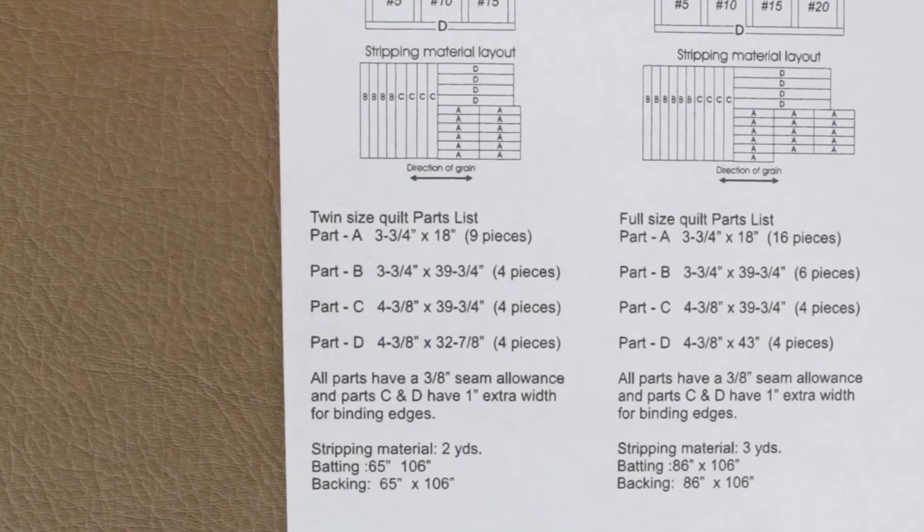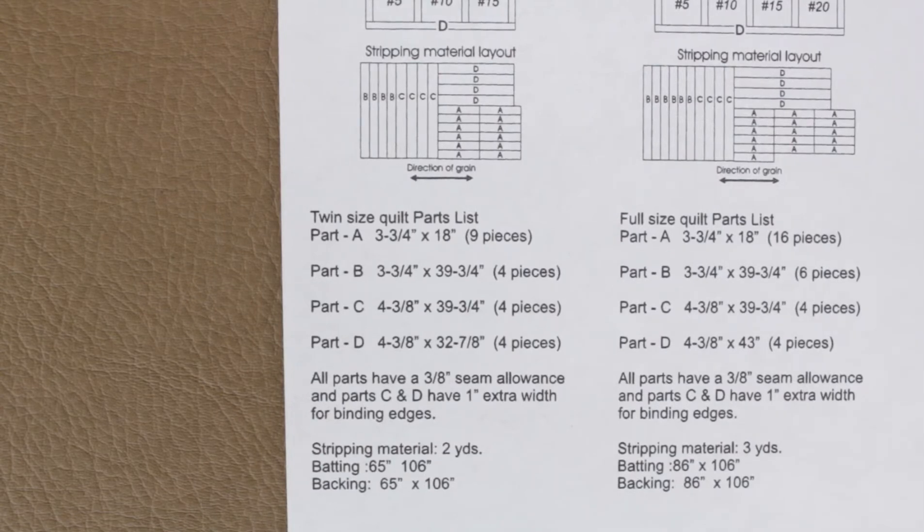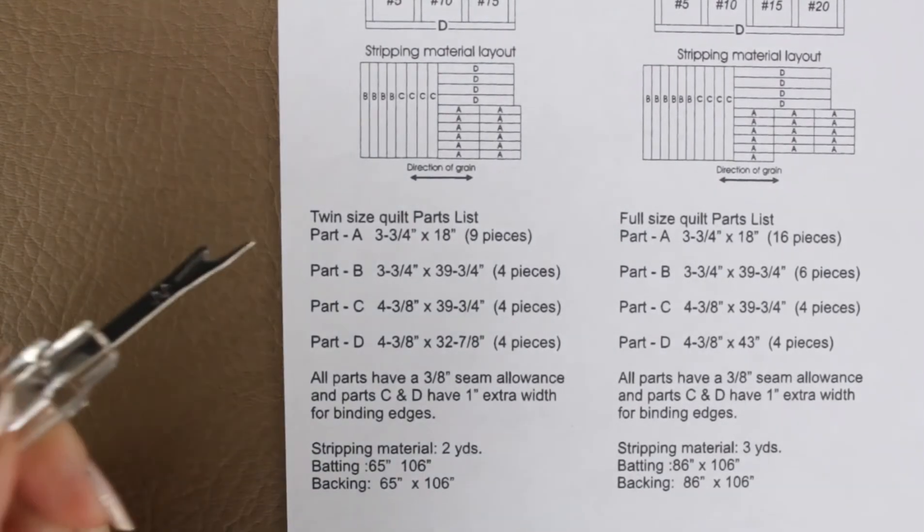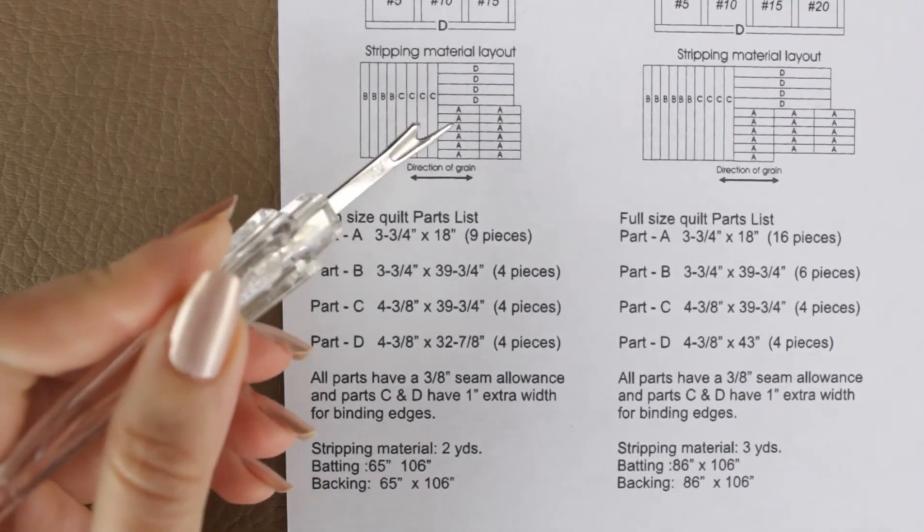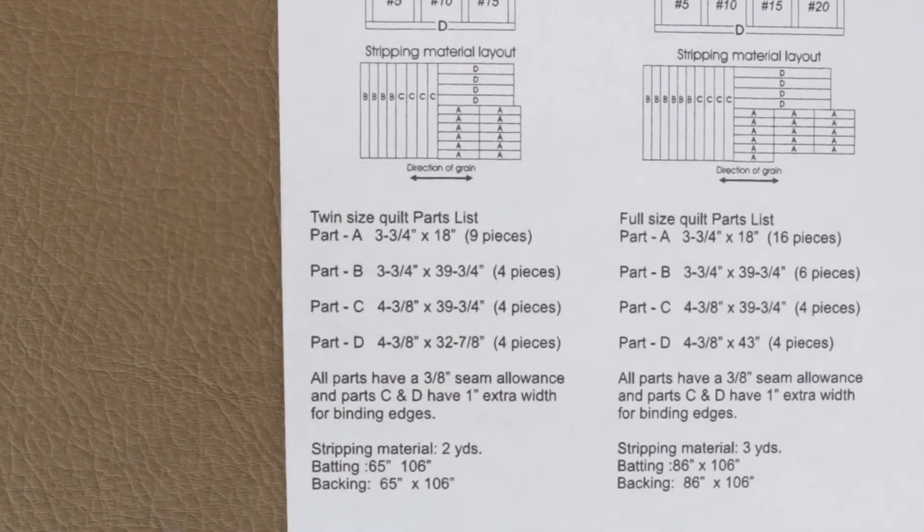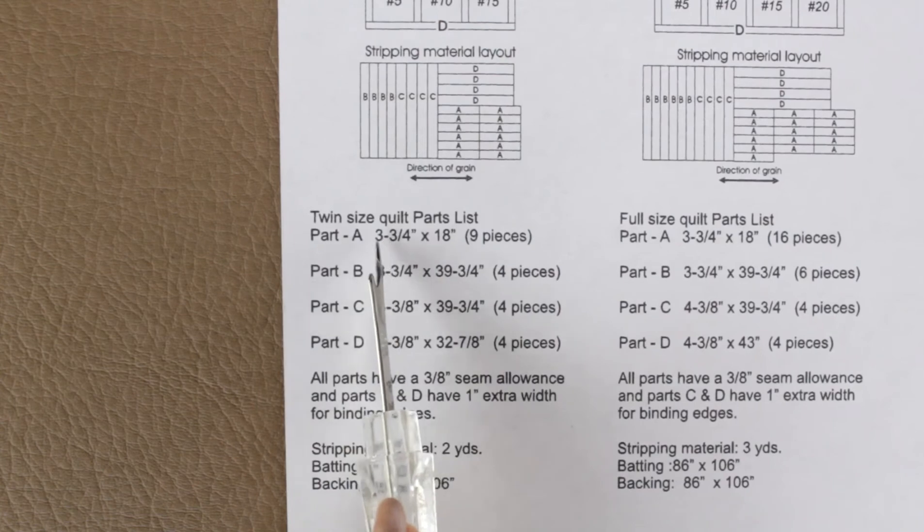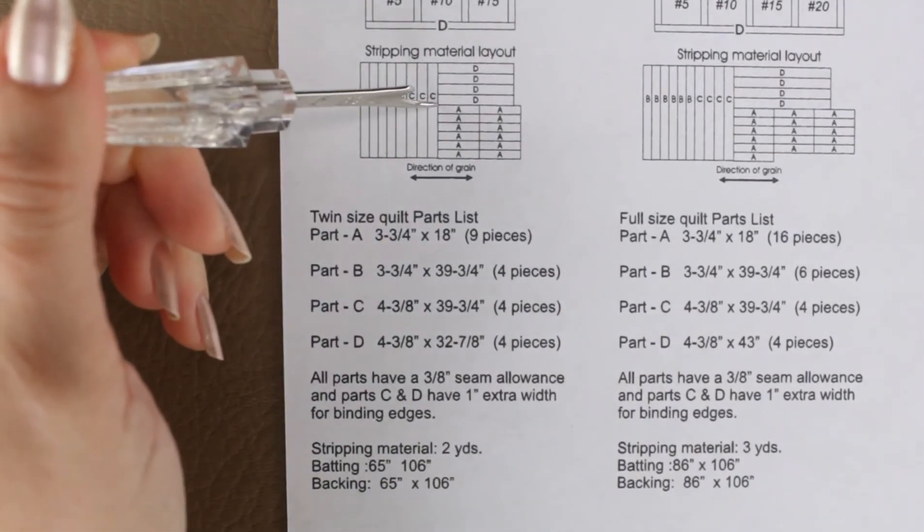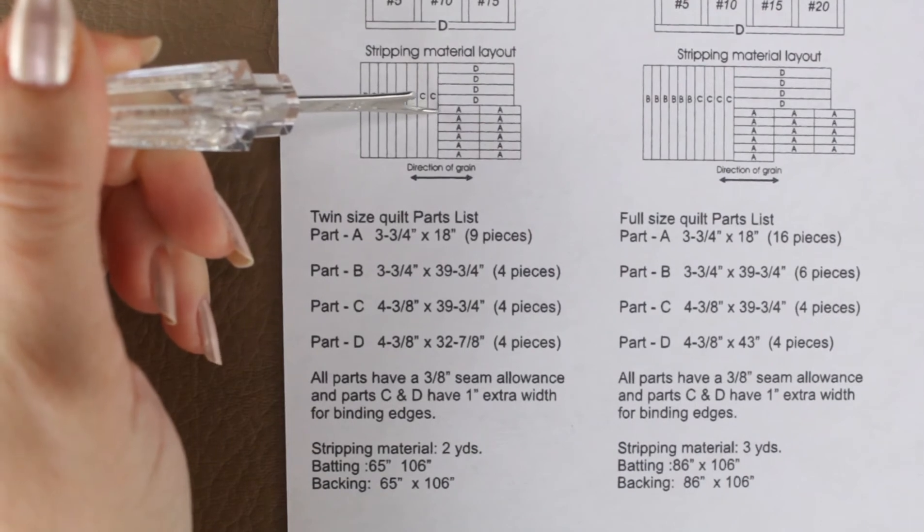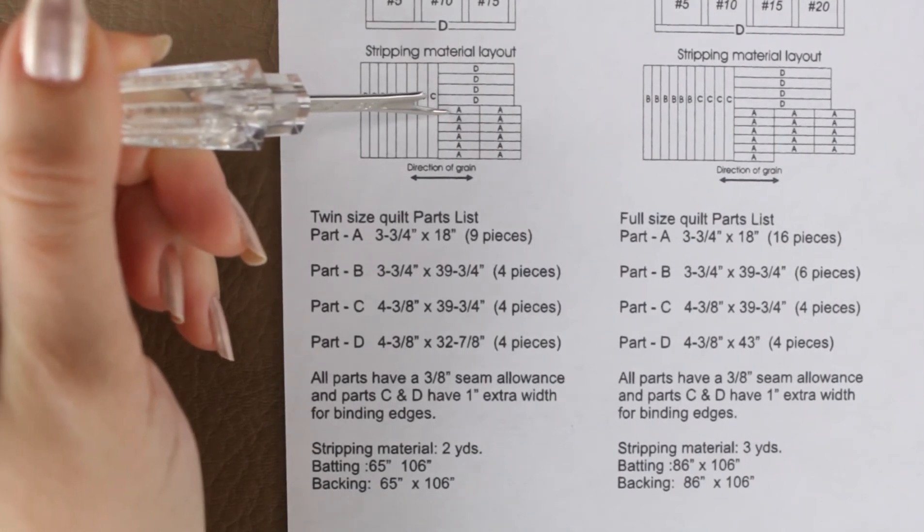Now that we know the number of strips, the next thing we need to figure out is how big each individual strip needs to be. What's really nice about this chart is they've done all the work for us. We have our letters again down here, corresponding to our chart up here. Everything is consistent. So if I need to know how big to make each A strip, they're telling you the size: 3-3/4 by 18 inches. So if I look at an A box, 3-3/4 would be going this way, and the 18 inches would be going this way.